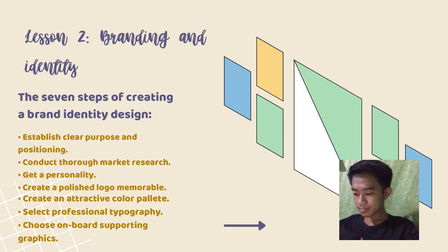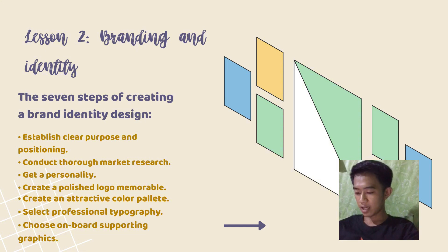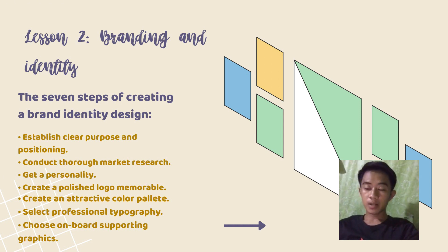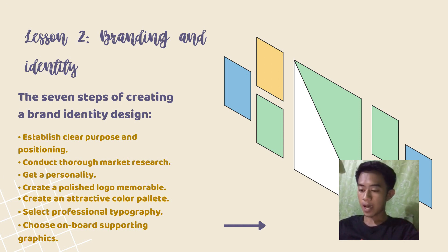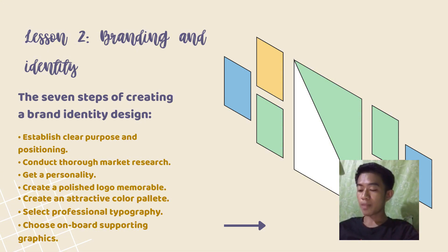Let's enumerate the seven steps of creating brand identity. Number one, establish clear purpose and positioning. Number two, conduct thorough market research. Number three, get a personality. Number four, create a polished logo. Number five, create an attractive color palette. Number six, select professional typography. And number seven, choose on-brand supporting graphics.